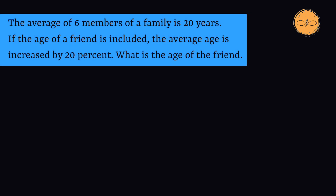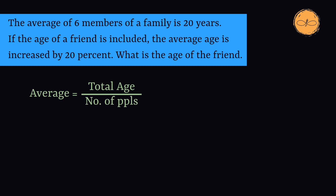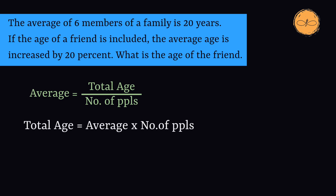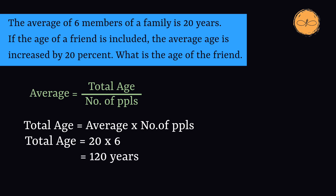So, we have to find the friend's age. We know that average equals total age divided by number of people, so total age equals average multiplied by number of people. The total age of the family members will be 20 multiplied by 6, which is 120 years.